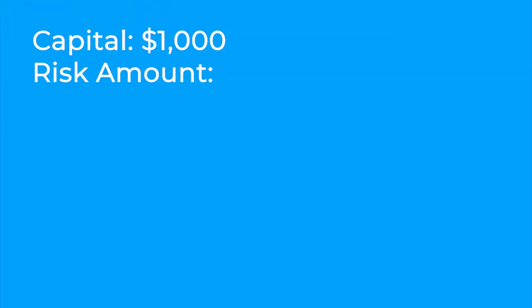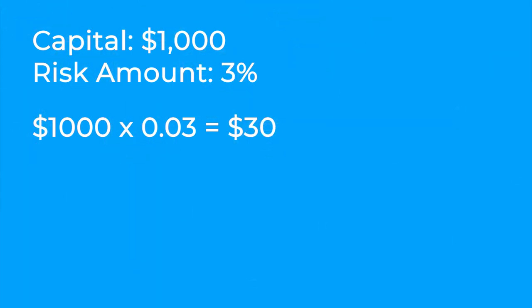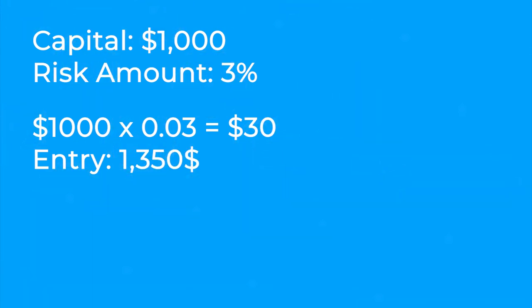I am trading ETH/USD on Bybit and I want to calculate my position size for a long. My starting capital is $1,000. My risk amount is 3%, so 1,000 times 0.03 equals $30. The entry I'm going to use is $1,350 and my stop loss is going to be $1,325. In order to calculate the distance to stop loss, I simply use the TradingView measuring tool and then convert the percentage into a decimal.